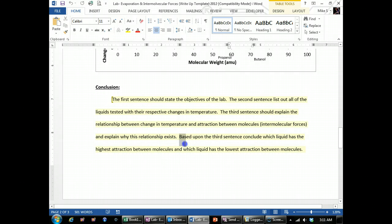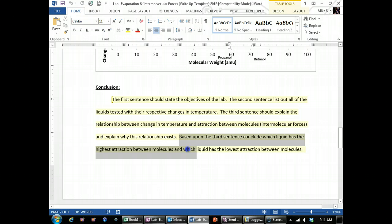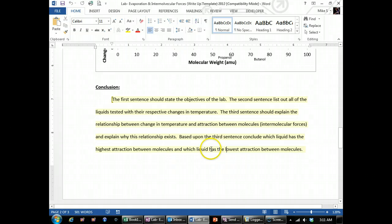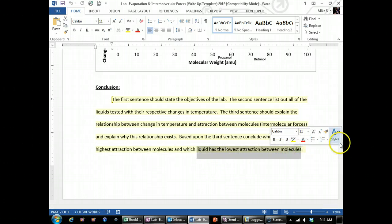Then there's the third sentence. You conclude which liquid has the highest attraction. So look through your experimental data and say, I believe that blank has the highest attraction between molecules because it had the, and then you reference your data, lowest delta T or highest delta T, whichever one. And then do that same thing for the one that had the lowest attraction between molecules.